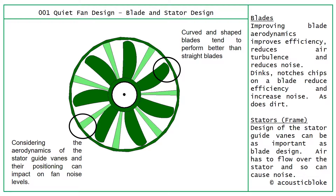Improving blade aerodynamics improves efficiency and reduces turbulence, which reduces air noise. Dinks, notches, chips and dirt on a blade will reduce its efficiency and impact overall noise level. So if you're looking at an existing fan system, it's worth checking that the blades are in good condition. We're concerned with ensuring a good level of balance in the system, as these defects affect balance, and when things run out of balance they have a tendency to make more noise.